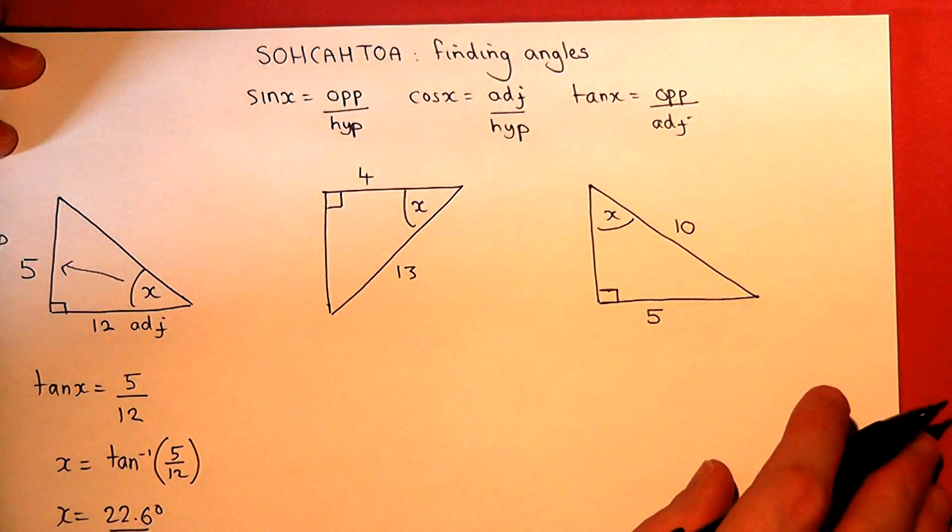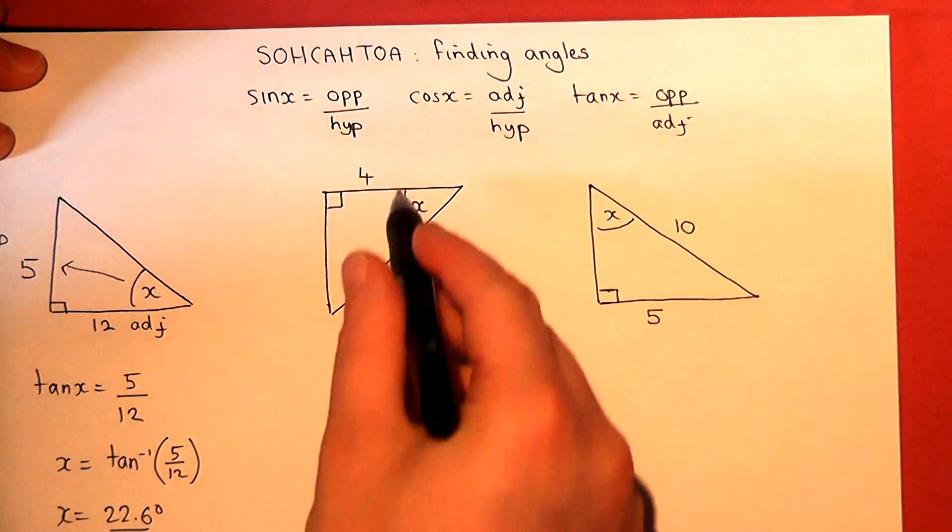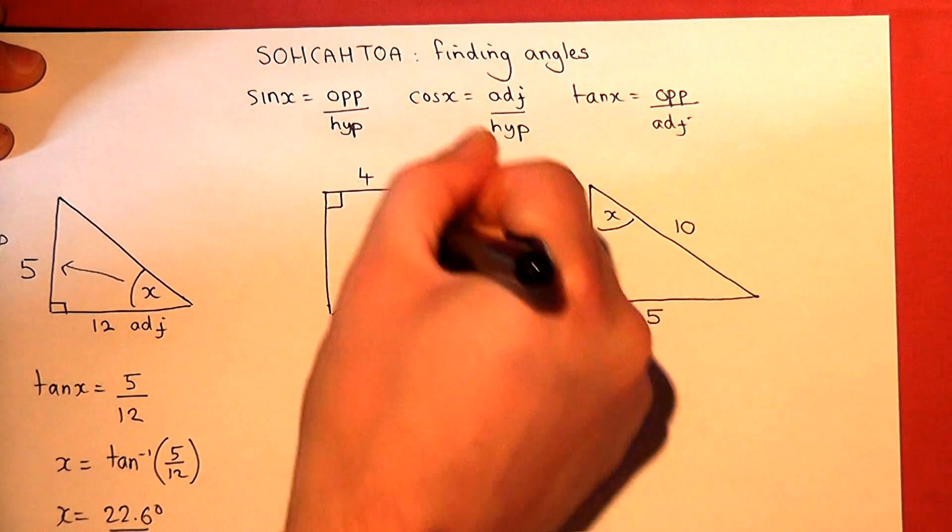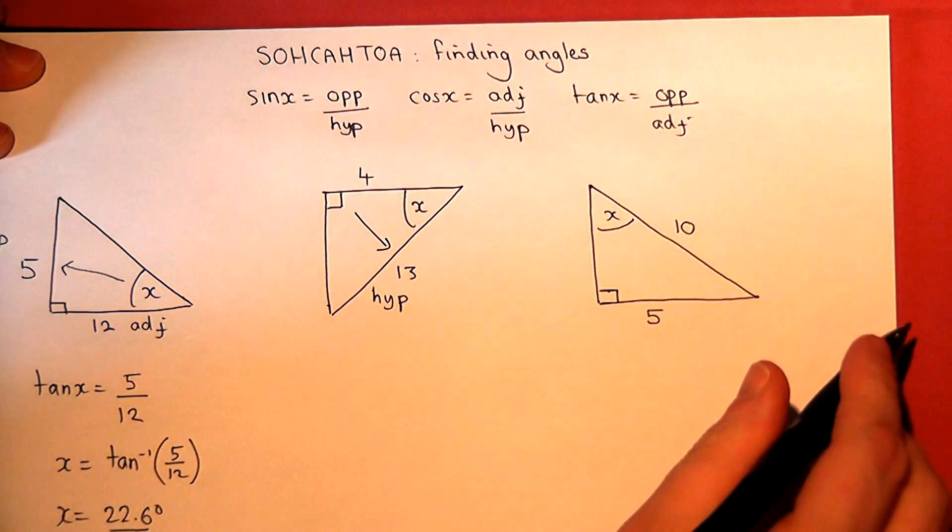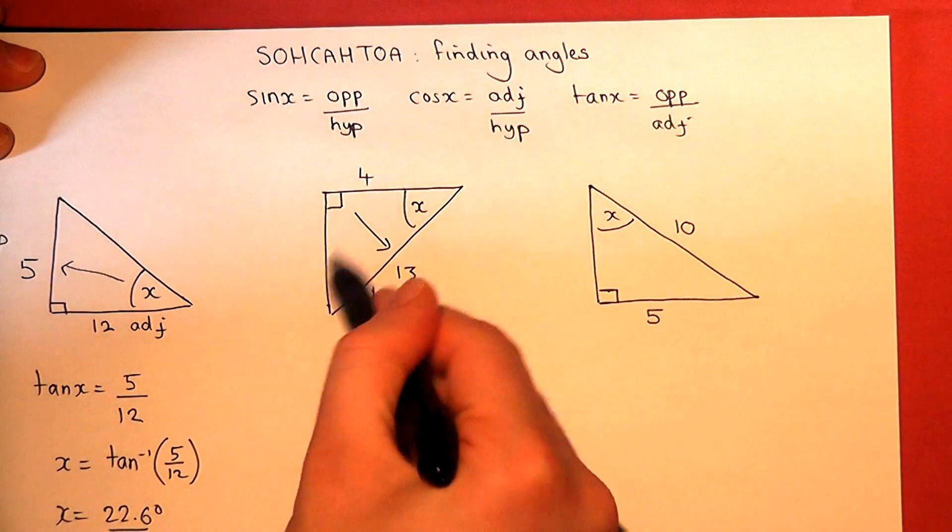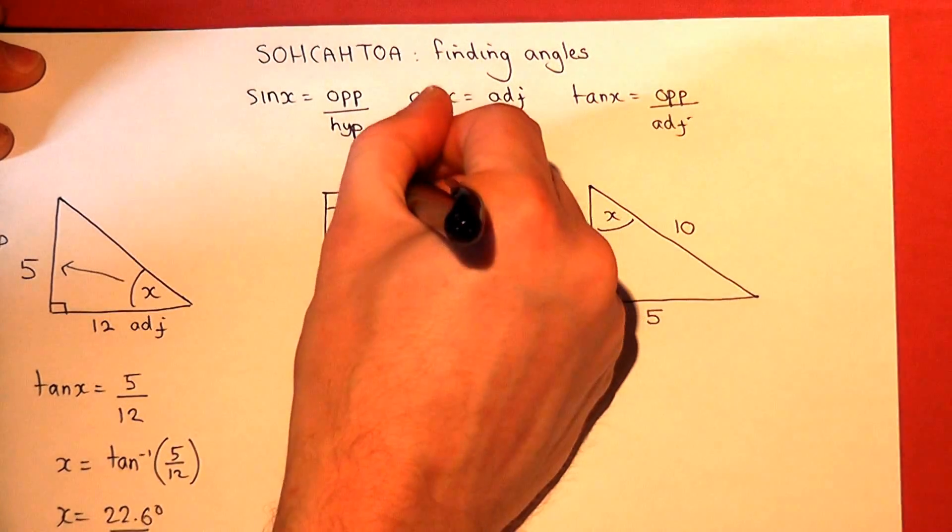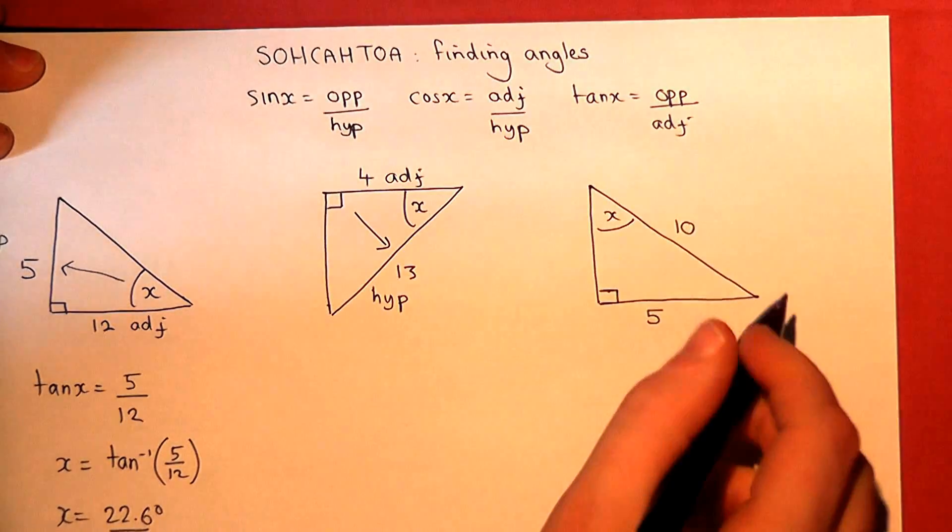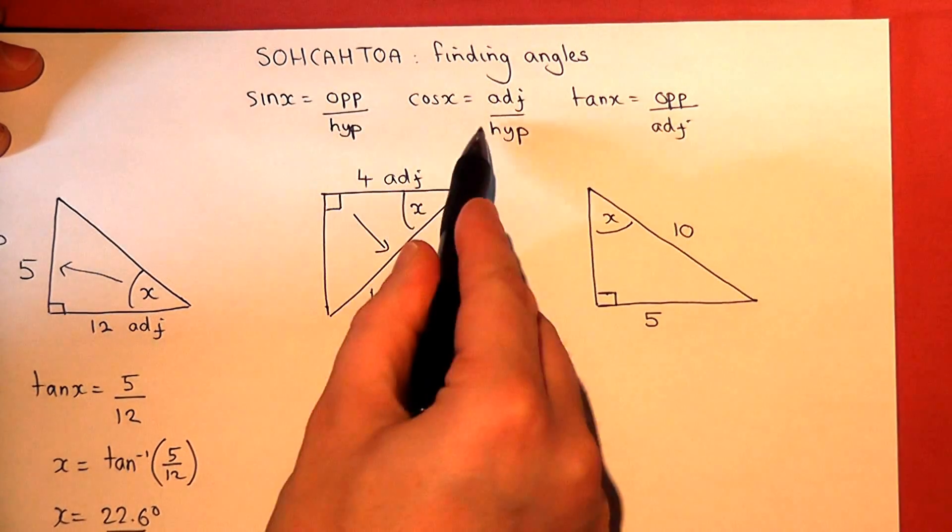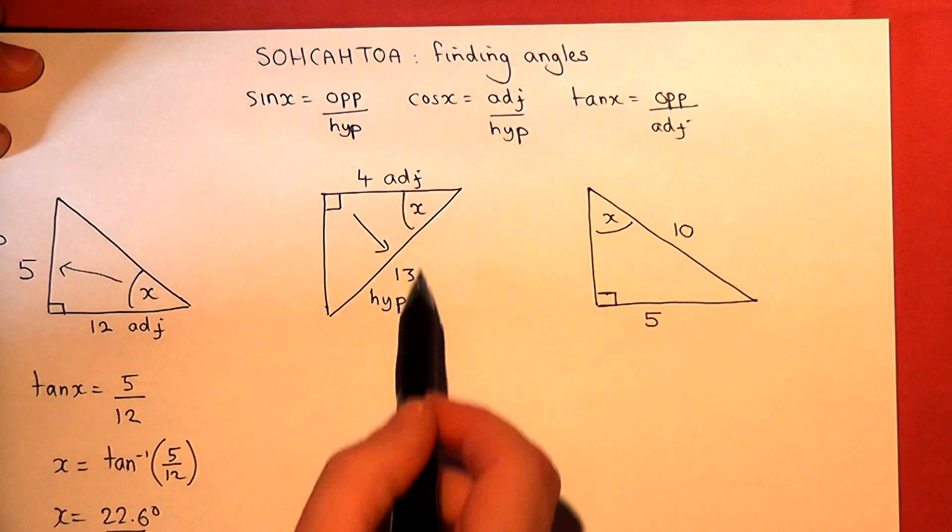The second question, we know two different sides. Here's our angle. One of them is the hypotenuse, because it's opposite the right angle. This one here is not opposite the angle. It's therefore the adjacent. So we know the adjacent and the hypotenuse, so we identify which of the equations uses those two sides. It's the cos ratio.